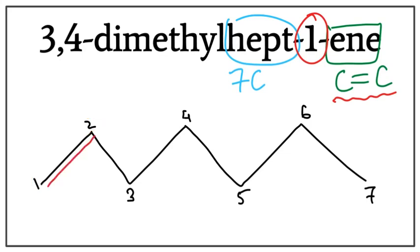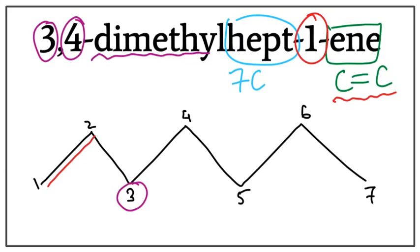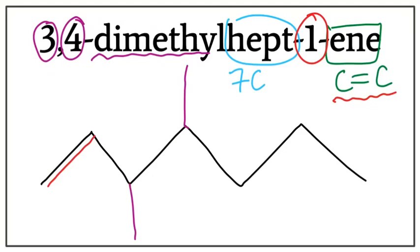Let's draw the double bond. We also have a dimethyl, meaning that there are two methyls attached to this carbon chain — one on the third carbon and the other on the fourth carbon. So let's get rid of these numbers and attach the methyl on the third carbon and on the fourth carbon. This is the structure for 3,4-dimethyl-hept-1-ene, or 3,4-dimethyl-heptene.